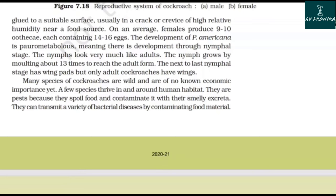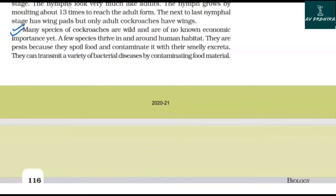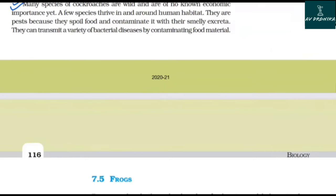On average, females produce 9 to 10 oothecae, each containing 14 to 16 eggs. The development of Periplaneta americana is paurometabolous, meaning there is development through a nymphal stage. The nymphs look very much like adults and grow by molting about 13 times to reach the adult form. The next-to-last nymphal stage has wing pads, but only adult cockroaches have wings. Many species of cockroaches are wild and of no known economic importance, but a few species thrive around human habitats. They are pests because they spoil food and contaminate it with their smelly excreta, and can transmit a variety of bacterial diseases by contaminating food materials.